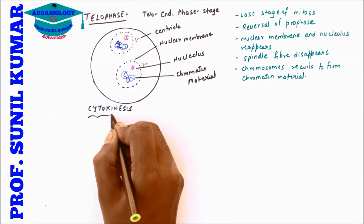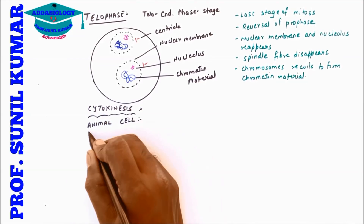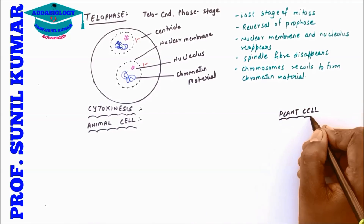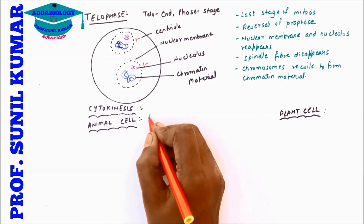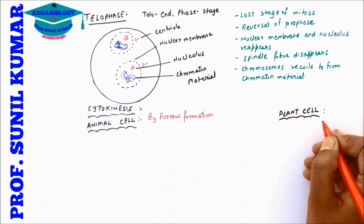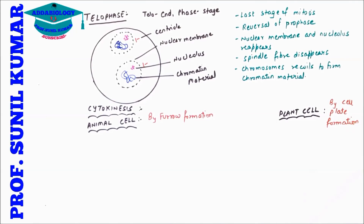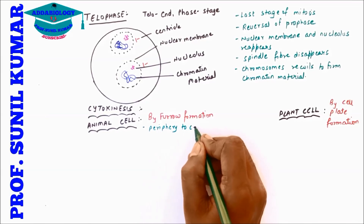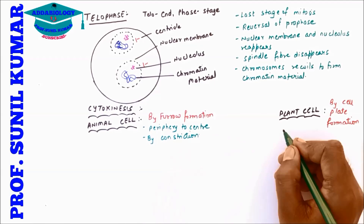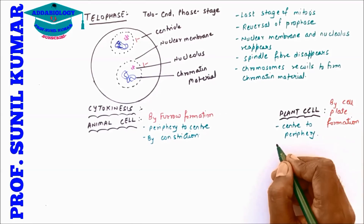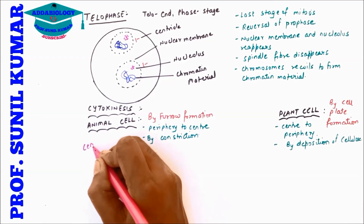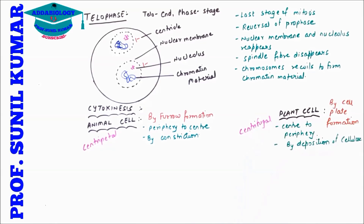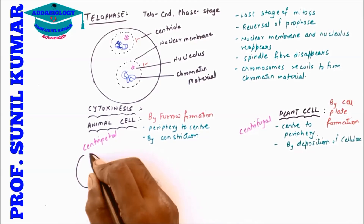Once karyokinesis is over, cytokinesis takes place. We need to understand cytokinesis with respect to both animal and plant cells. In animal cells, cytokinesis takes place by furrow formation; in plant cells, it takes place by cell plate formation. In animal cells, the furrow starts from the periphery and moves towards the center by constriction — this is centripetal movement.